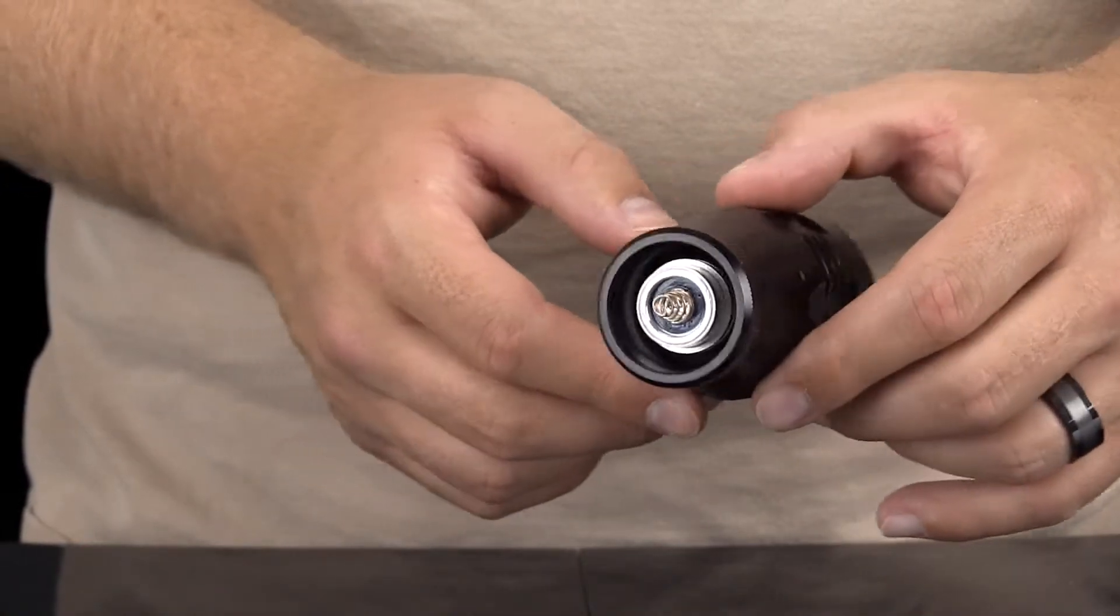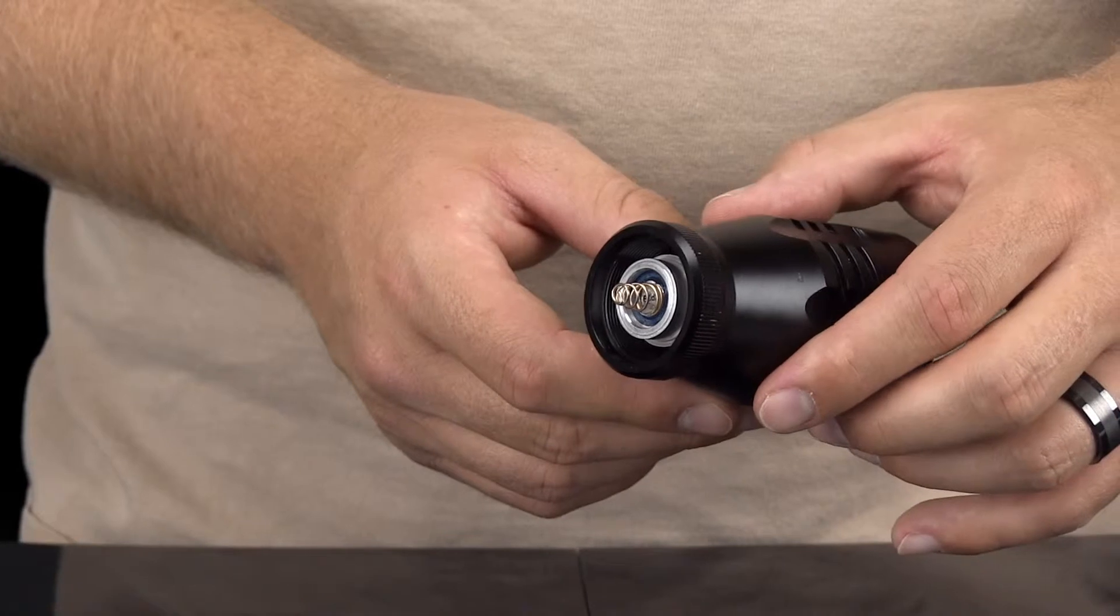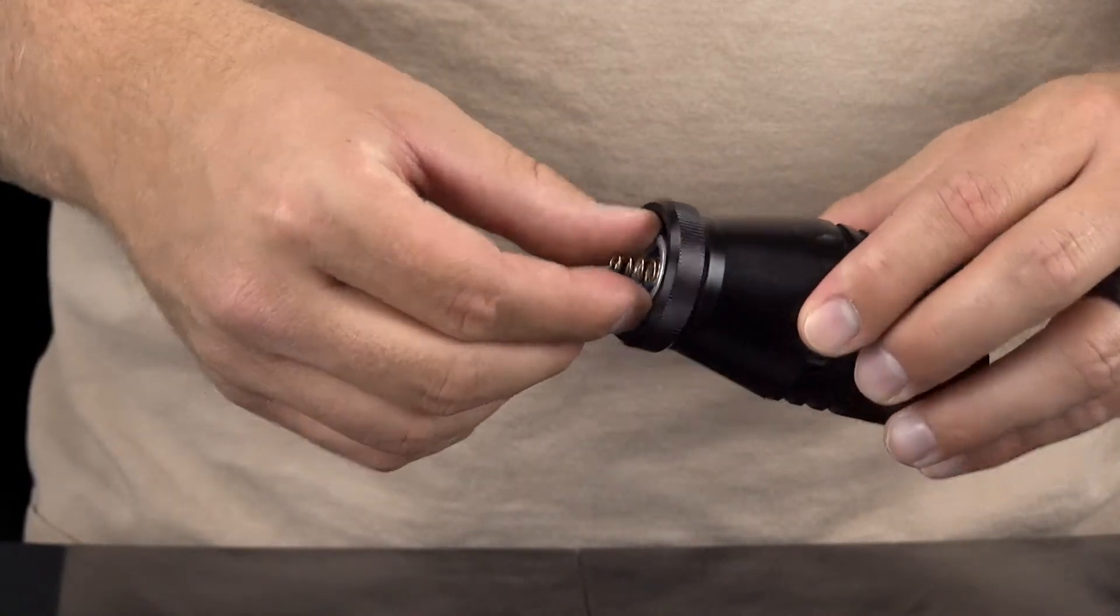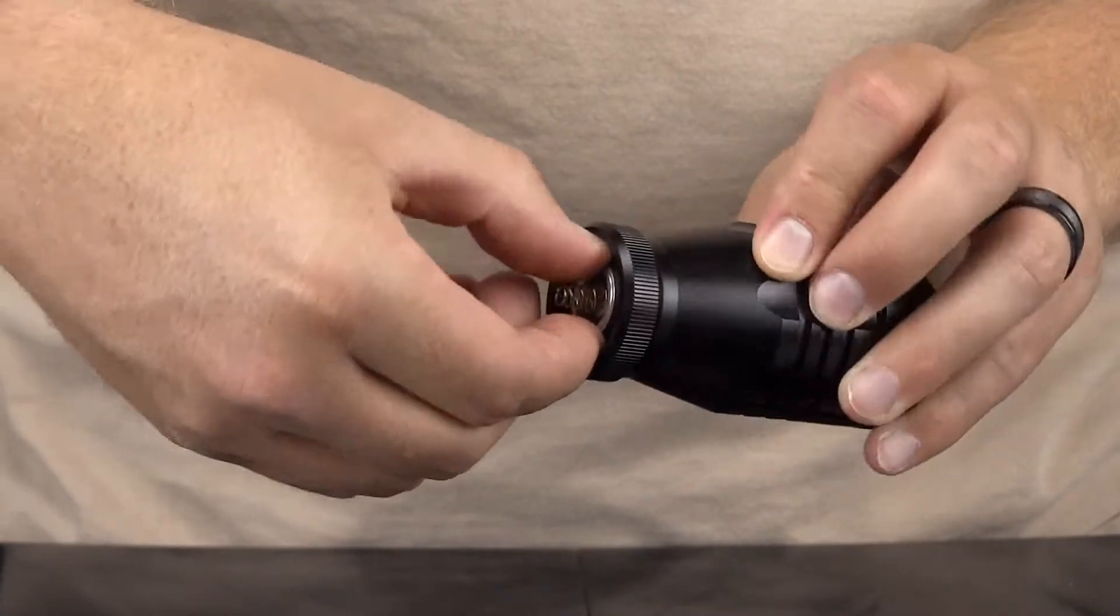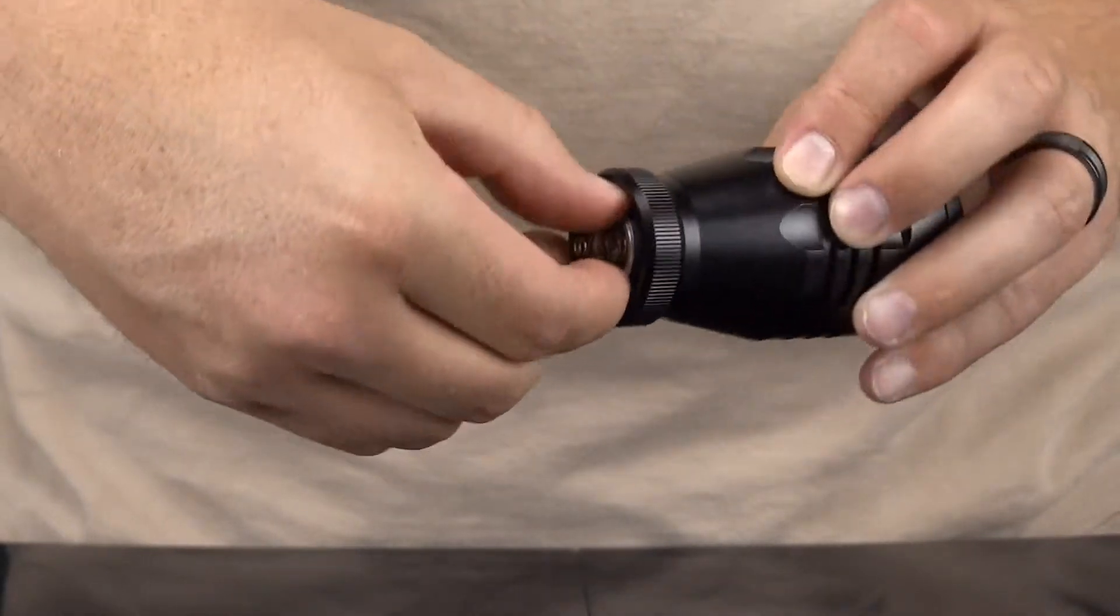When you look inside the bezel, you will see the bottom end of the LED assembly. You remove the LED assembly by carefully gripping it on the edges and gently unscrewing it from the reflective housing.